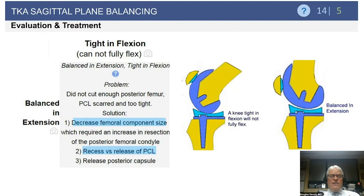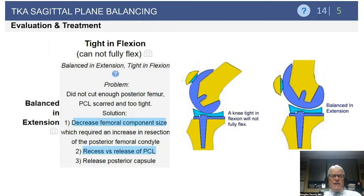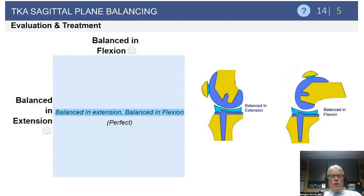Next scenario: balanced in extension, tight in flexion. The problem is usually that enough bone was not resected from the posterior femur. You can also see this if you have an excessively scarred and contracted PCL. The solution: decreasing femoral component size, which requires increased bone resection of the posterior femoral condyles, will correct your tightness in flexion. Other alternatives include recessing or releasing the PCL, releasing the posterior capsule, or occasionally increasing your posterior tibial slope.